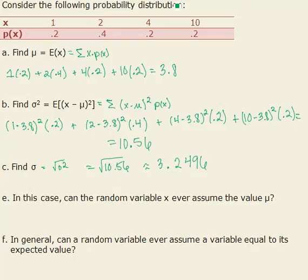So continuing on let's look at just E and F. In this case can the random variable x ever assume the value of mu? And the answer is no because our x's can only equal 1, 2, 4, and 10 and our mu is 3.8 which is not part of our probability distribution.